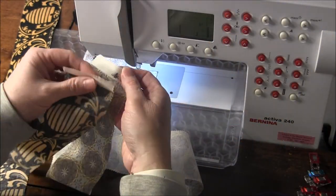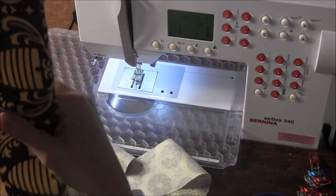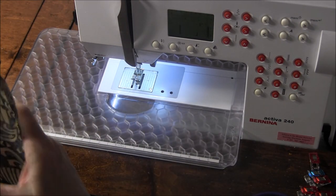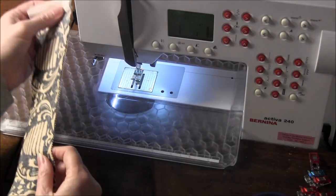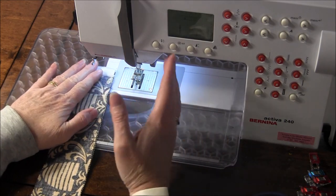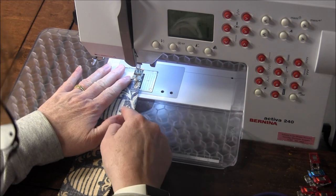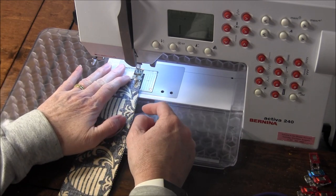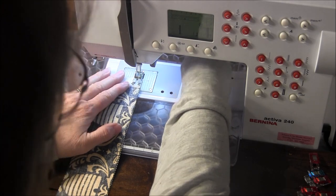Take your first two strips and put them right sides together, lining up the long edges. And then with a white or neutral thread in your machine, stitch with a quarter inch seam allowance along the whole long edge.